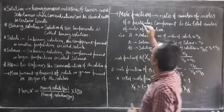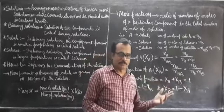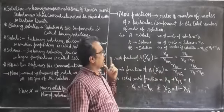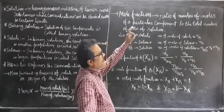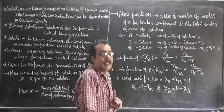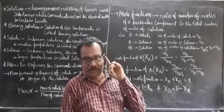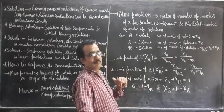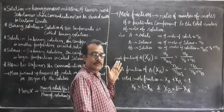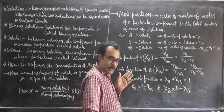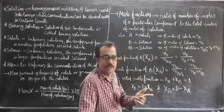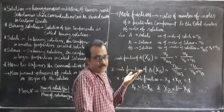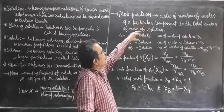Now the next expression is mole fraction. The name itself tells you it must be a ratio — fraction means ratio. So mole fraction means the ratio of moles. Mole fraction is the ratio of the number of moles of any one component to the total number of moles of the solution. The total number of moles of the solution would be the number of moles of the solute plus the number of moles of the solvent.